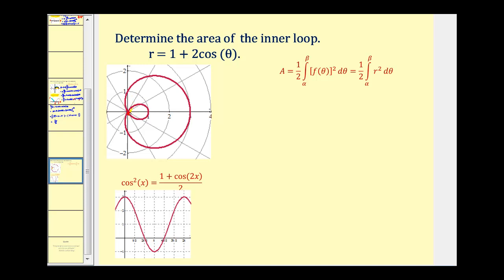So we want to determine the area of this region here. As I mentioned in the previous videos, it's often helpful to graph this on the rectangular coordinate plane as well, where theta would be along the x-axis and r would be the y-axis. This graph should help us determine the limits of integration for our area formula. Notice the period of this graph would be two pi radians and it has an amplitude of two, which has also been shifted up one unit.